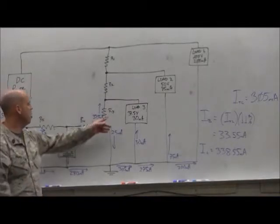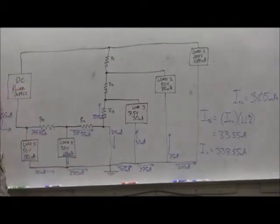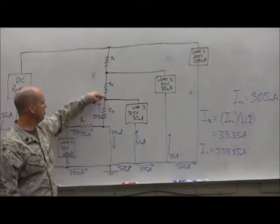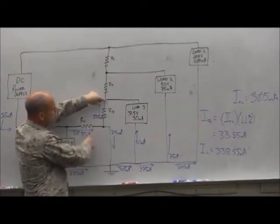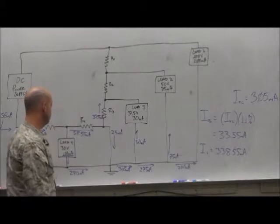Back over here to R3. Can we determine what the voltage drop of R3 is? Yes, we're giving it, aren't we? We're dropping 37.5 volts to this node. From here to here, we're dropping 37.5 volts.